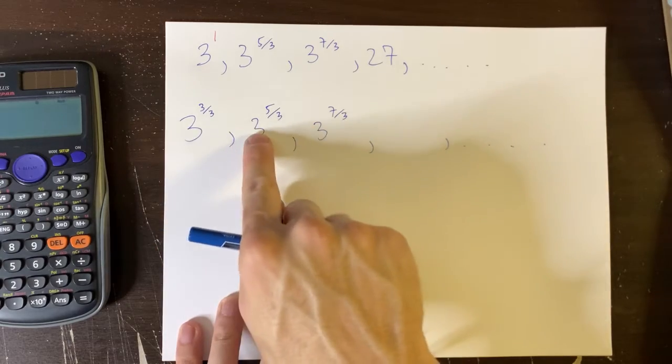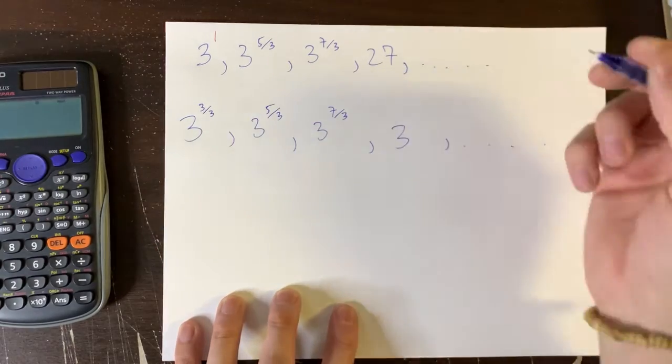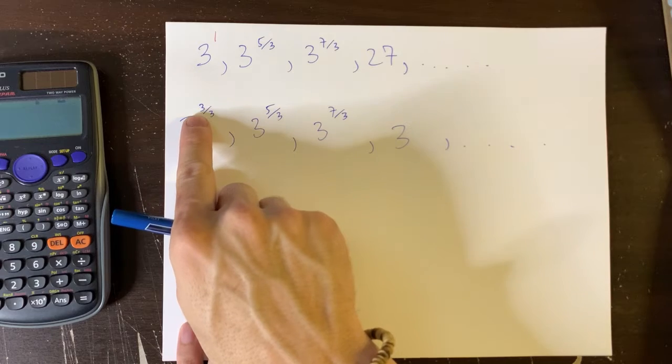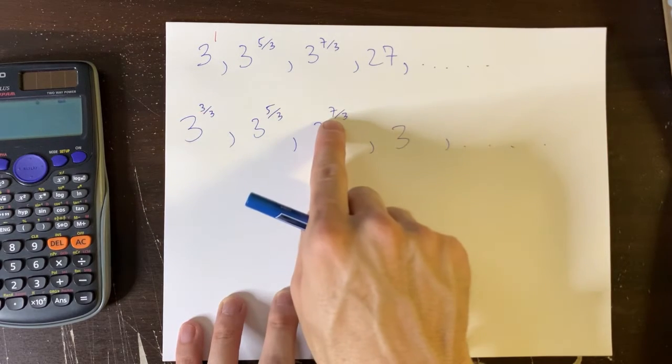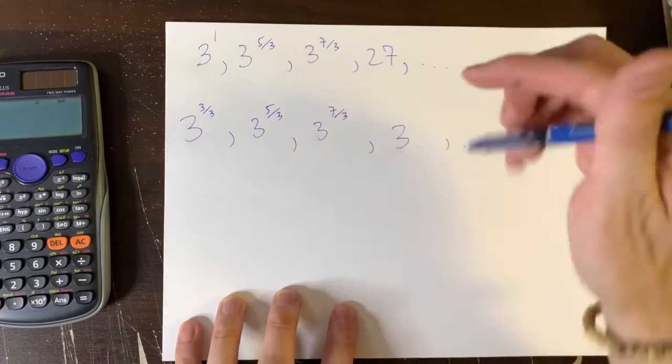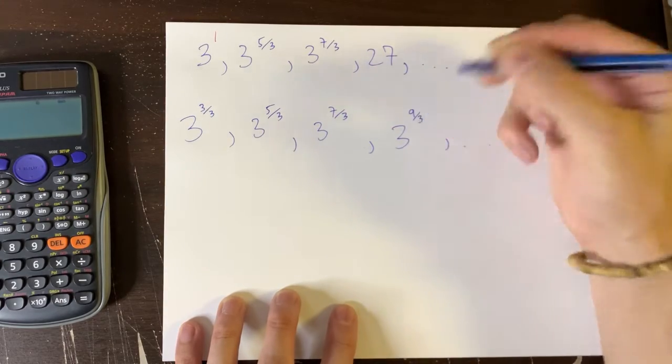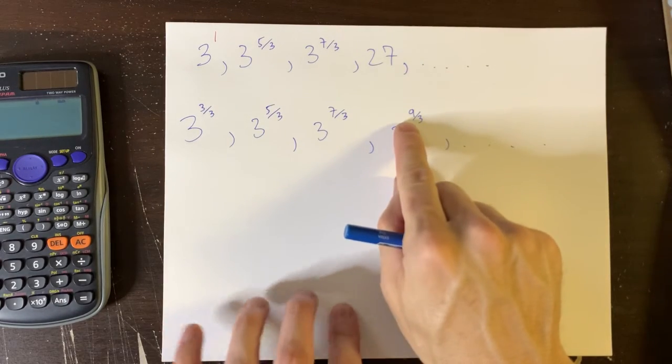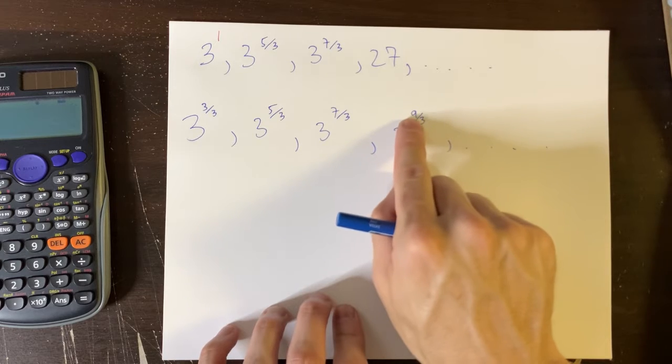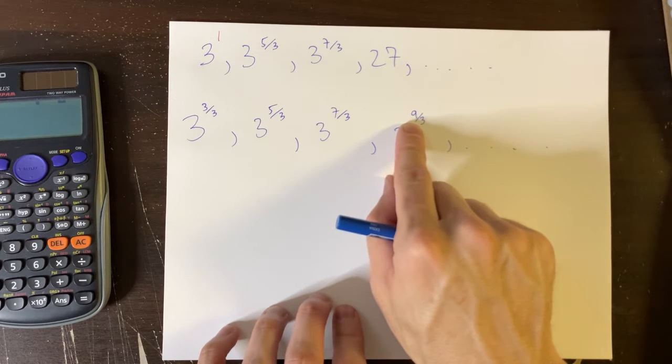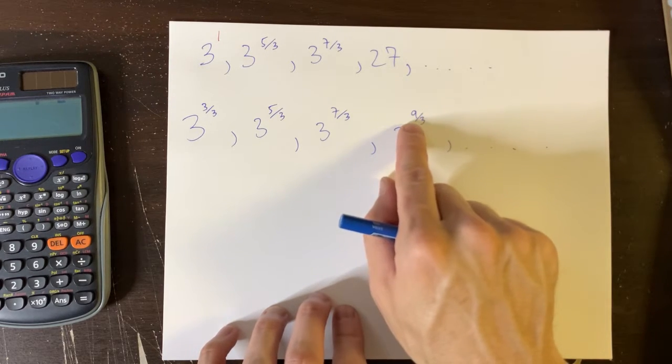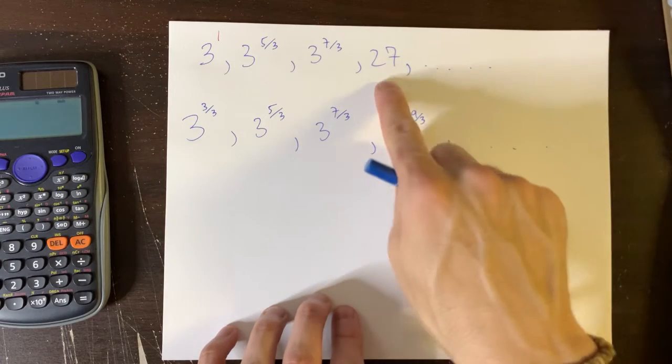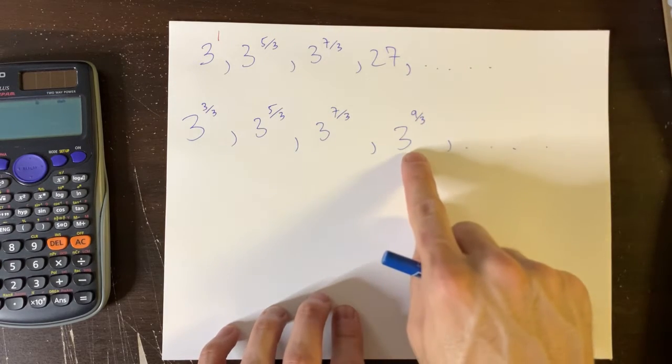So look, it's 3, 3, 3. So this is going to have to have a three. And what's the exponent? 3 over 3, 5 over 3, 7 over 3, 9 over 3. The anticipation is that this exponent is 9 over 3, and that is appropriate because 9 divided by 3 is 3. And 3 to the power of 3 is 3 times 3 times 3, which is the original 27. So this is appropriate.